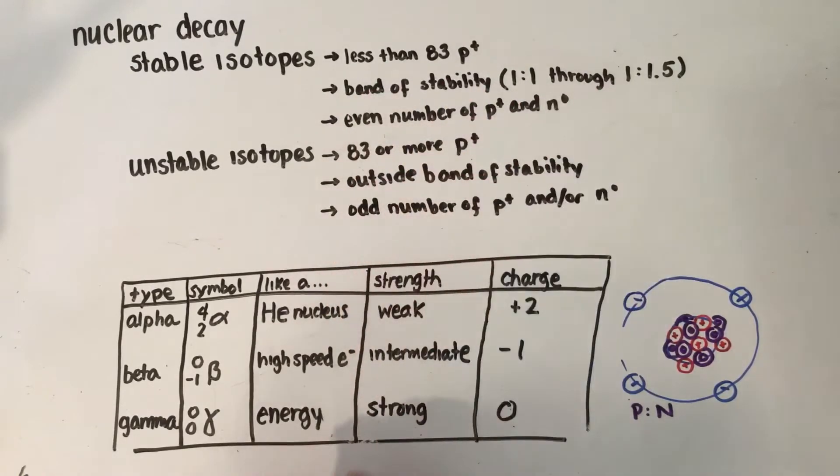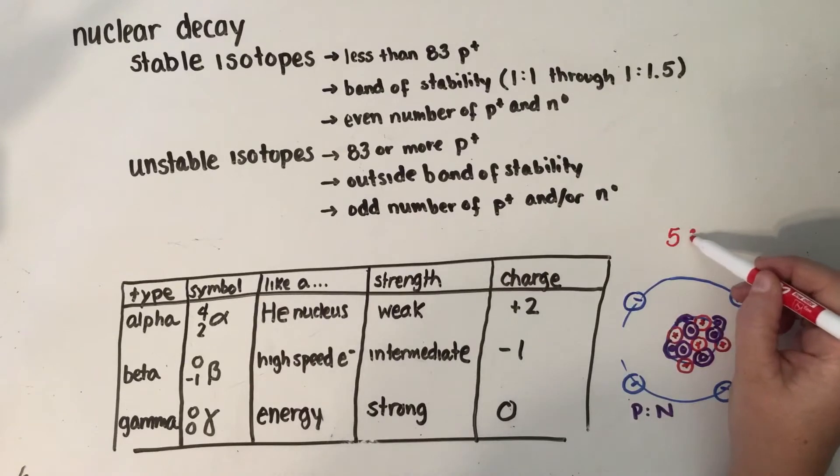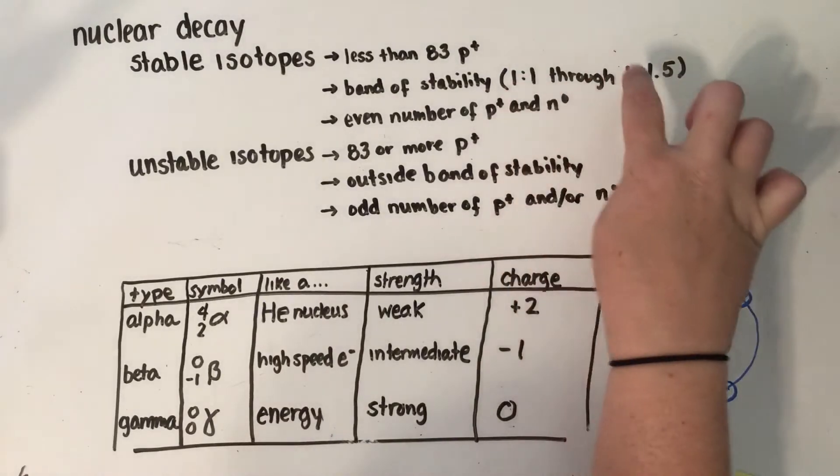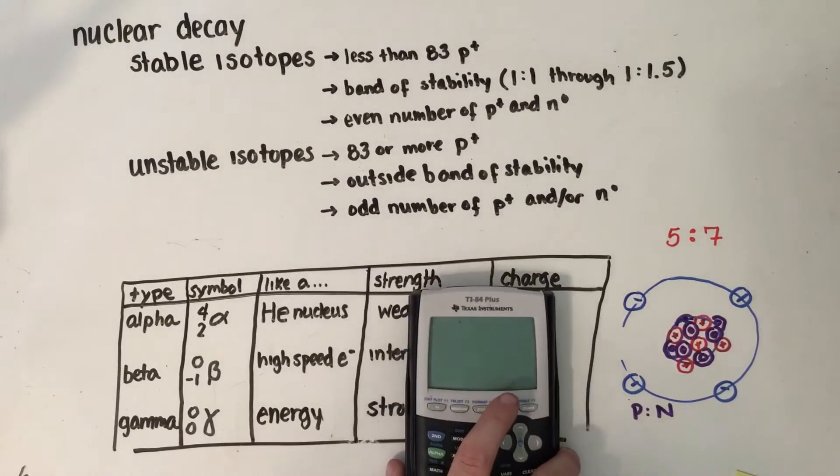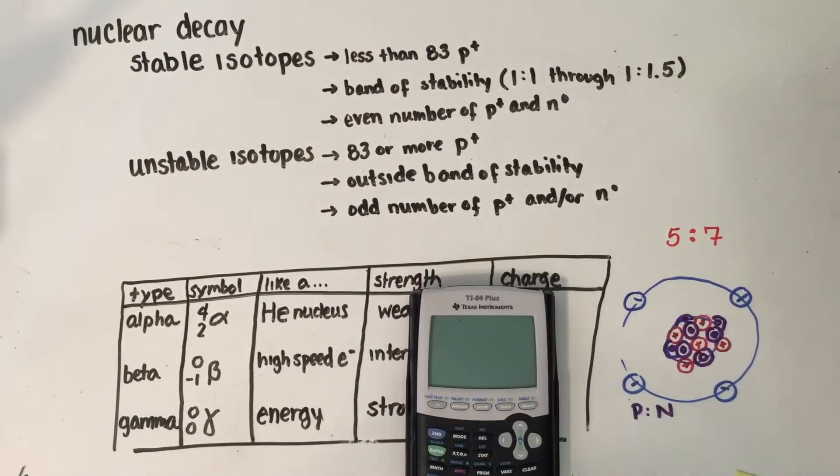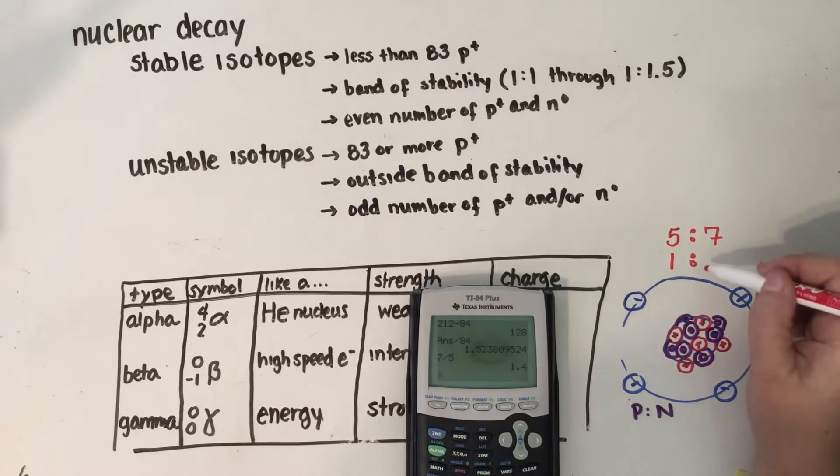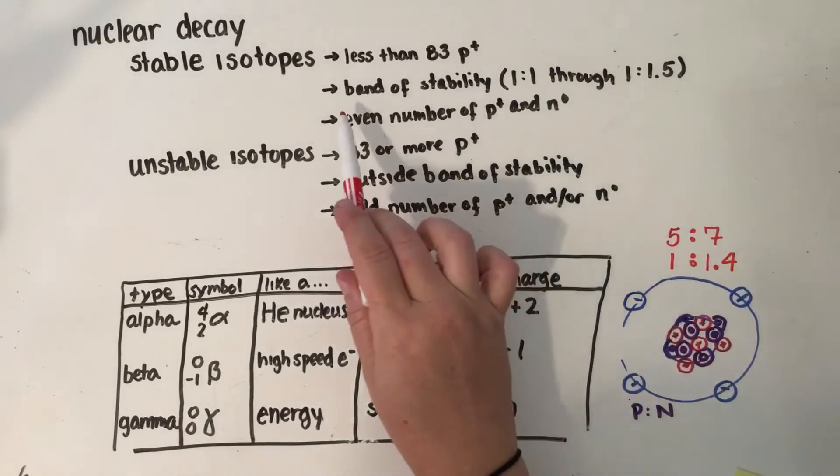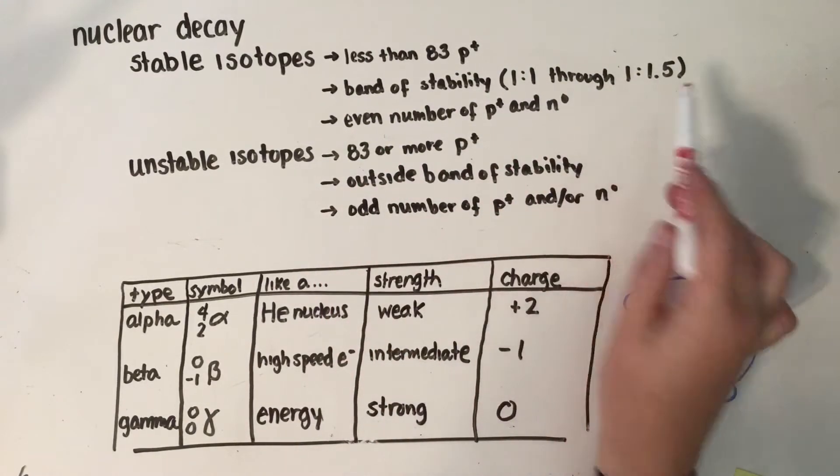We then look at the band of stability, which is our proton to neutron ratio. In order to figure out our band of stability, one thing we can do is count our subatomic particles. So here we have 1, 2, 3, 4, 5 protons, and 1, 2, 3, 4, 5, 6, 7 neutrons. That's a 5 to 7 ratio. To figure out if 5 to 7 is within our 1 to 1 through 1 to 1.5, we take both these numbers divided by the smallest. So 5 divided by 5 is 1, and 7 divided by 5 is 1.4. Our proton to neutron ratio is 1 to 1.4, which is within our band of stability of 1 to 1 through 1 to 1.5.